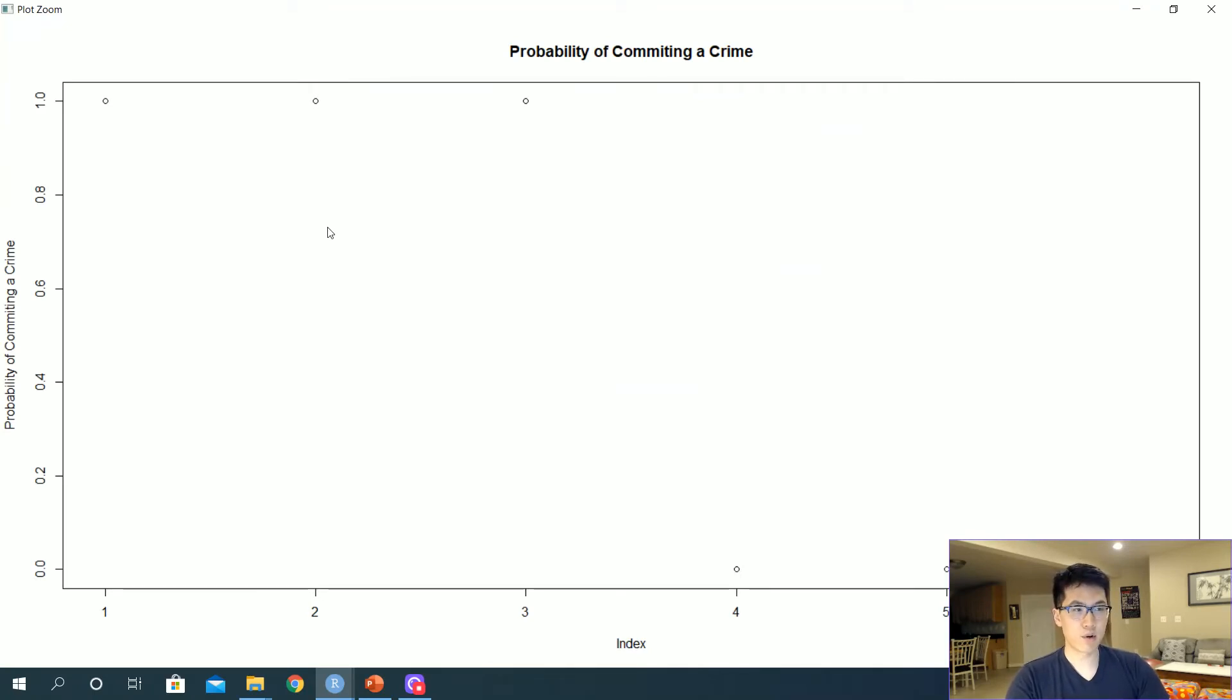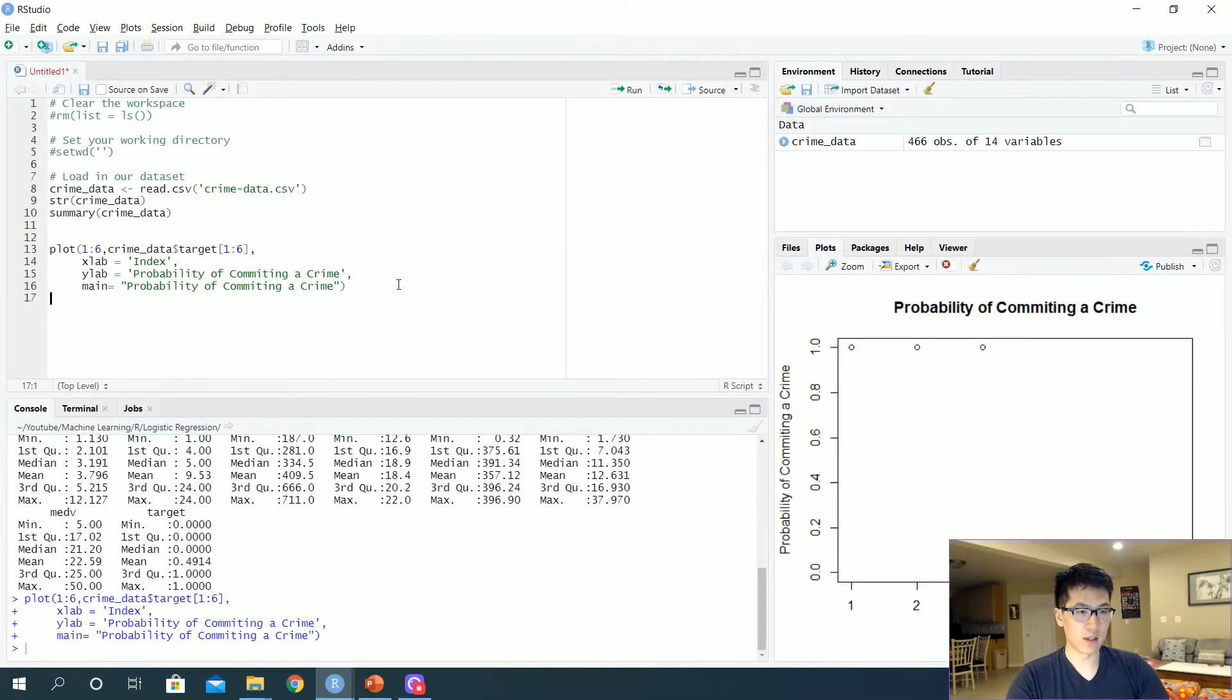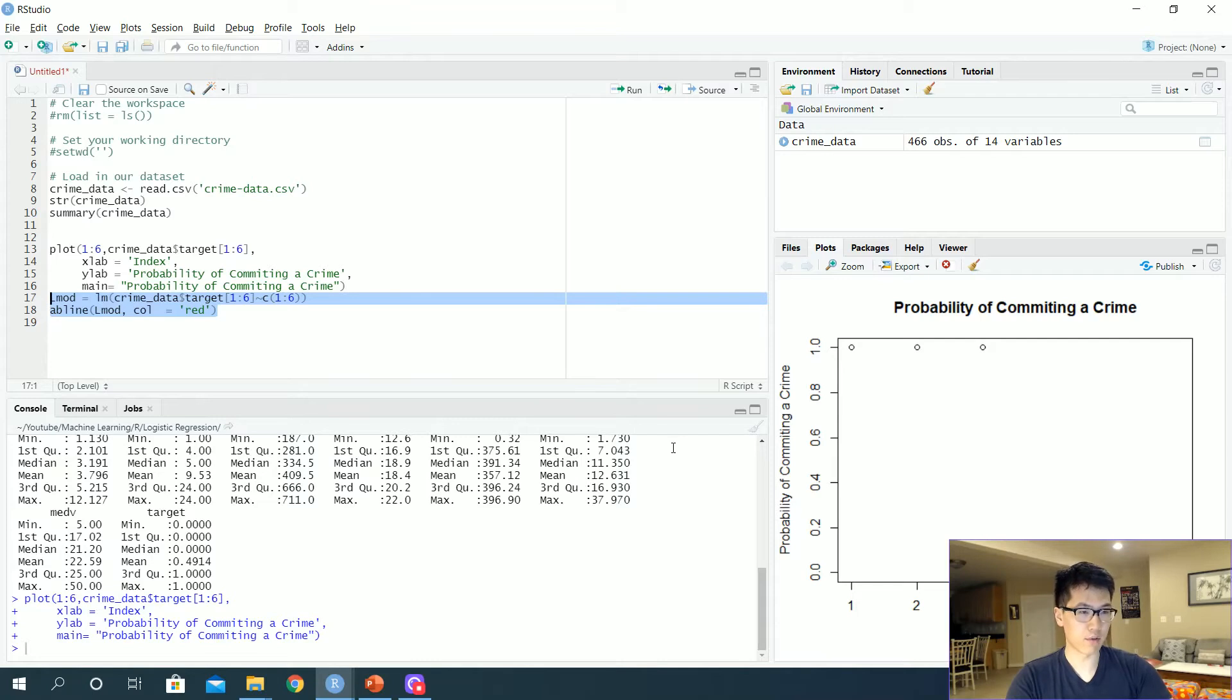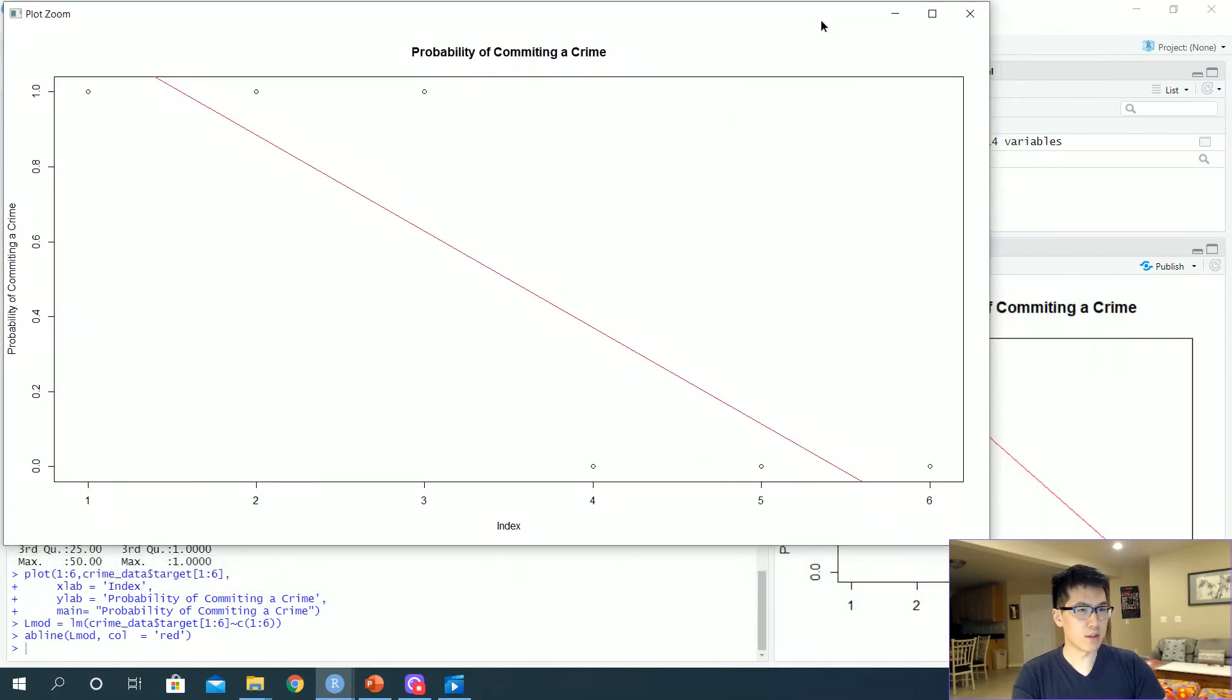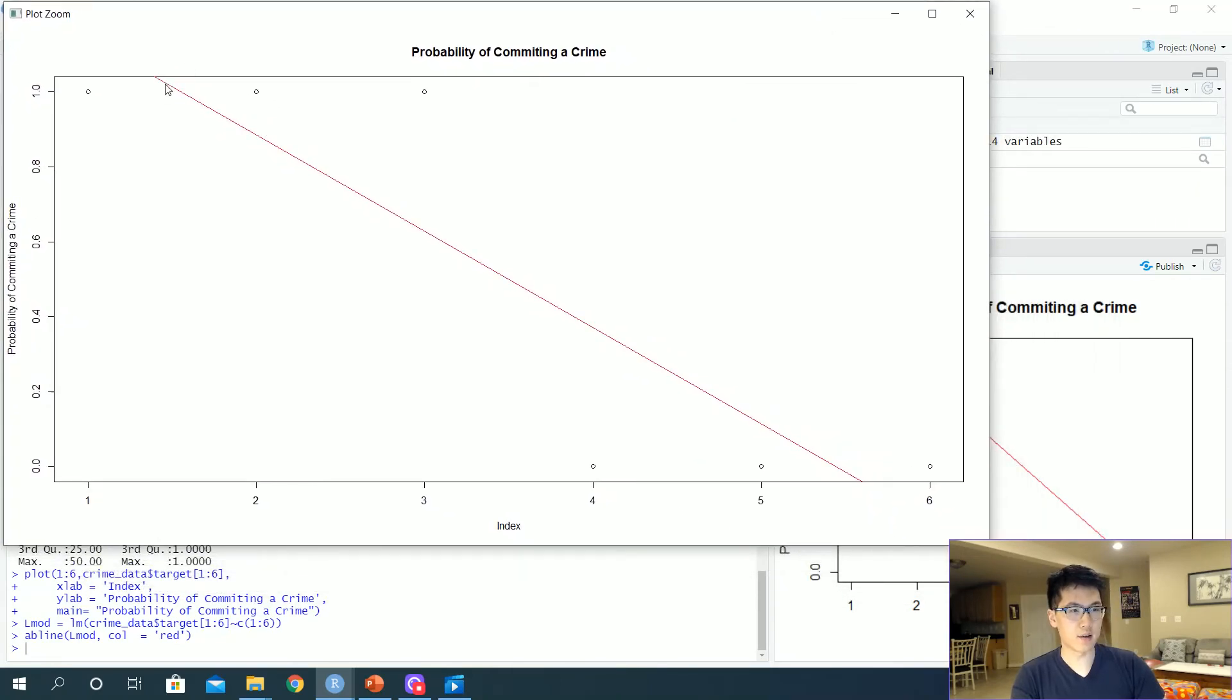This is what our data looks like, just the first six variables. If we were to predict using a linear model, our line will look something like this. I also pre-wrote this - once we create our linear model, our y tilde x, and we want to print it or plot it on our given graph over here, this is what the linear regression will look like.